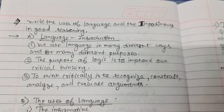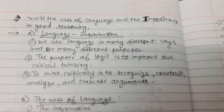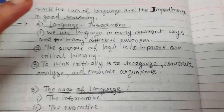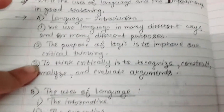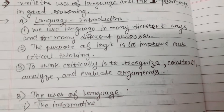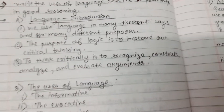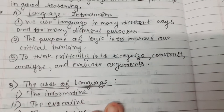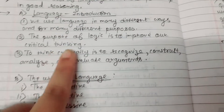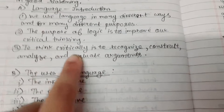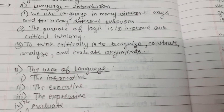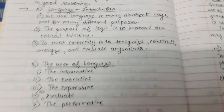Next: the uses of language and impediments in good reasoning. First, we have to write the meaning of language. We use language in many different ways and for many different purposes. The purpose of logic is to improve our critical thinking. To think critically is to recognize, construct, analyze, and evaluate arguments.